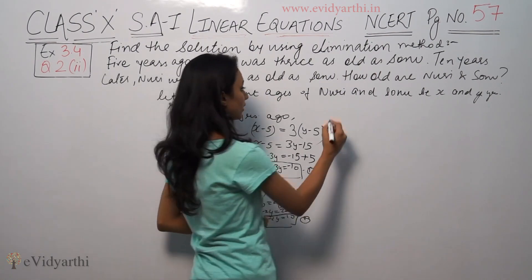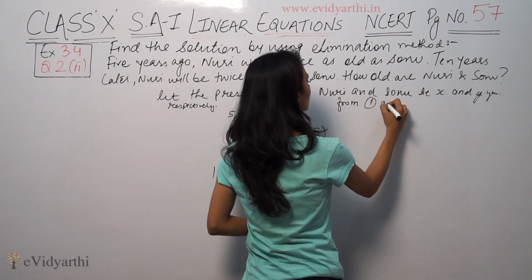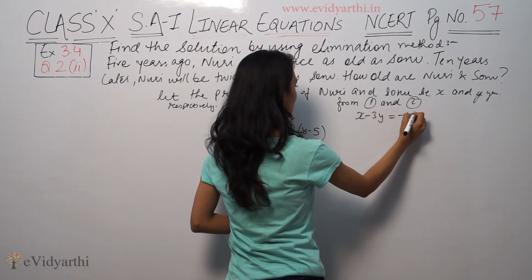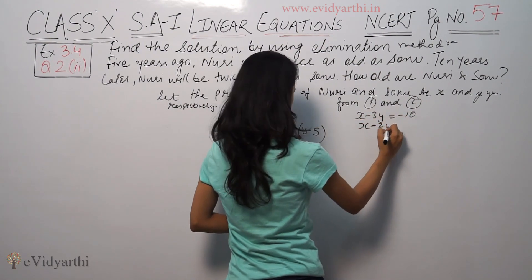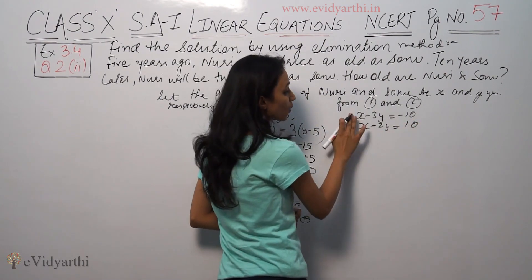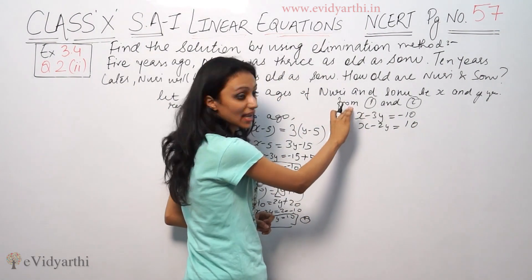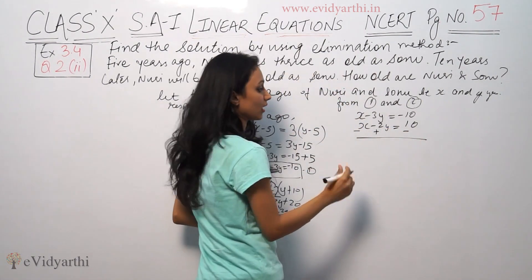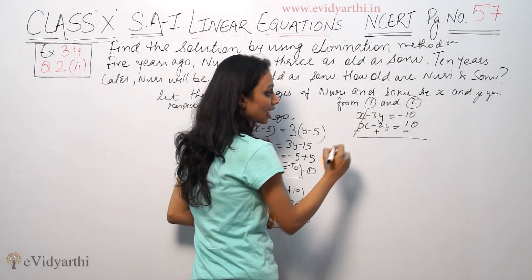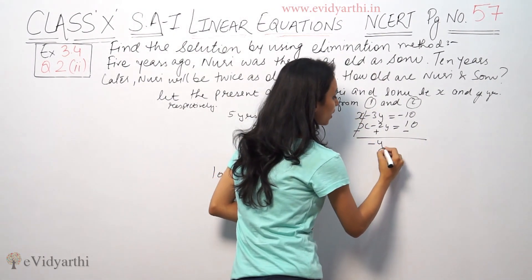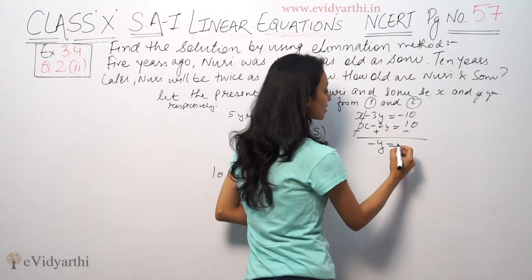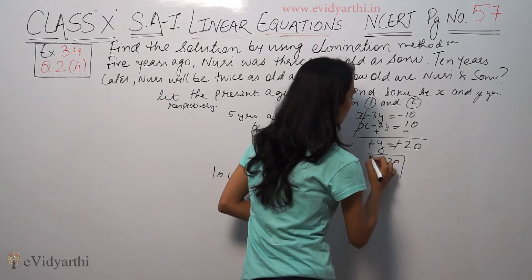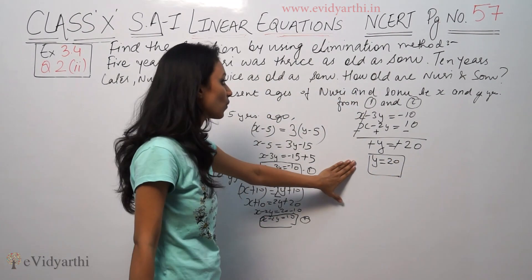So from the first and second equations: x minus 3y is equal to minus 10, and x minus 2y is equal to 10. So x will be eliminated. Minus 3y minus minus 2y gives minus y, and minus 10 minus 10 gives minus 20. So y is equal to 20.